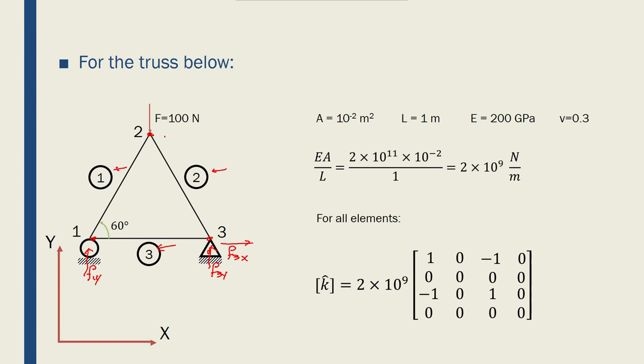And node 2 has these external forces. f2x is 0, and f2y is minus 100 because it's in the negative y direction.